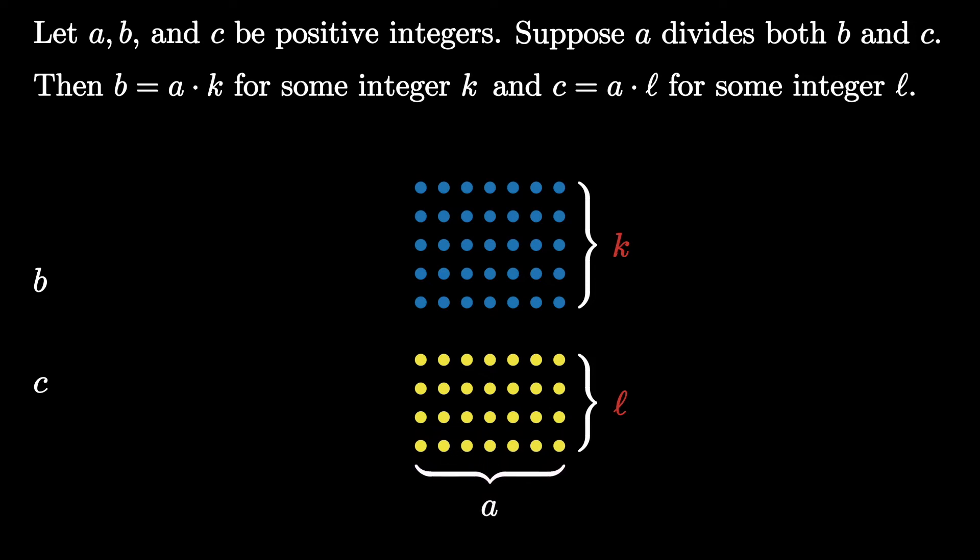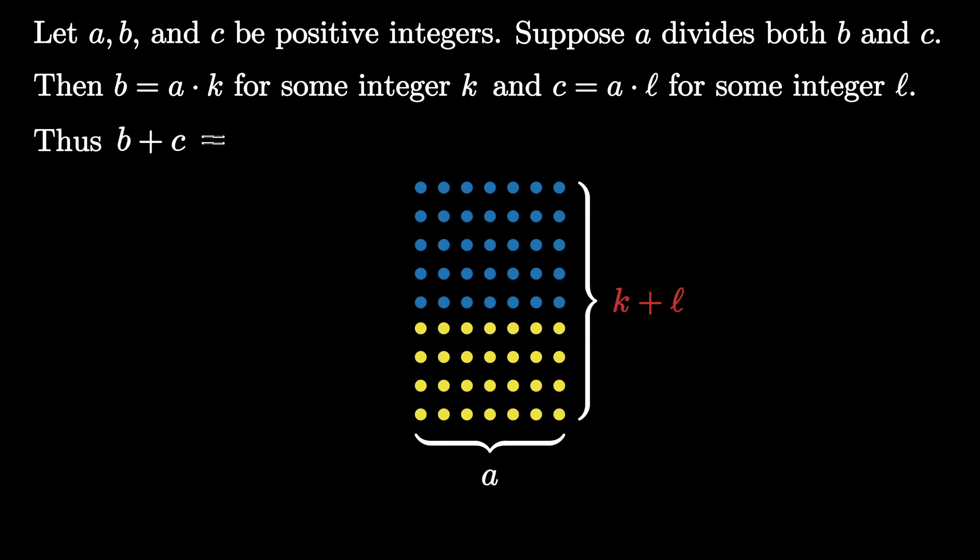But now we can see what integer we need for b plus c. By joining the two stacks together, we get a stack of k plus ℓ rows of size a. This means that b plus c is equal to a times k plus ℓ.